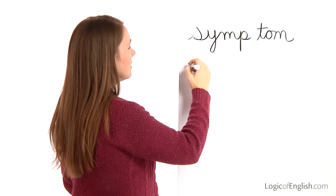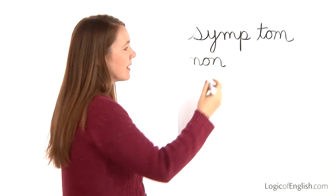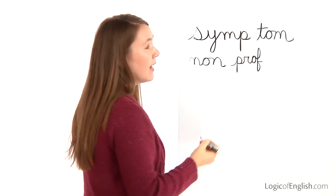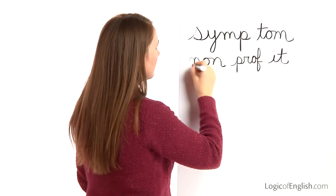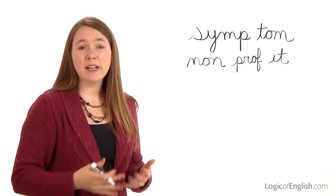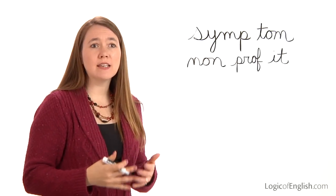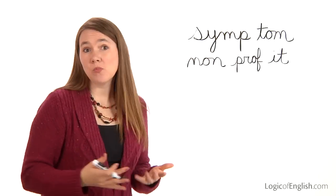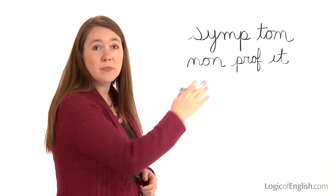The next word is nonprofit. Three syllables. The first syllable is non: N, o, n. The second syllable is prof: P, r, o, f. And the third syllable is it: i, t. Go ahead and write non-prof-it. N, o, n. P, r, o, f. I, t. Now, what is the root word of nonprofit? It's profit — money made by a company. But a nonprofit is one that doesn't profit from the work that they do; they do it more for charity. So non means not.